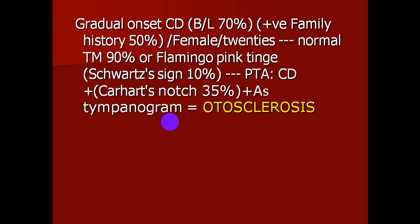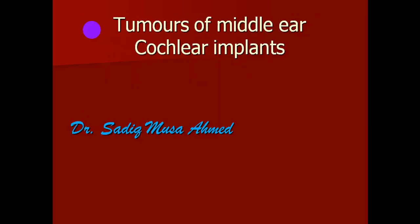To summarize otosclerosis: gradual onset of conductive hearing loss; bilateral in 70%; positive family history in 50%; female to male ratio 2:1; typical age is the third decade; normal tympanic membrane in 90% of cases; flamingo sign or Schwartze's sign in 10%; pure tone audiometry shows conductive hearing loss with Carhart notch in 35%; and the tympanogram type is AS.